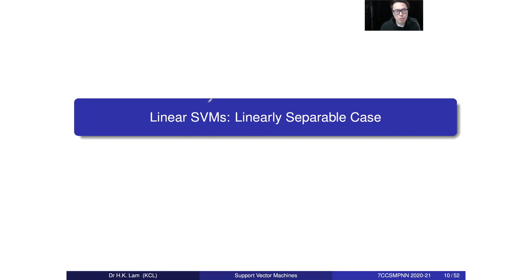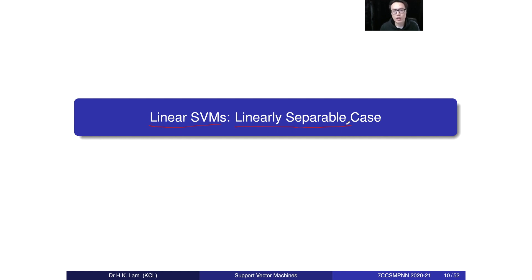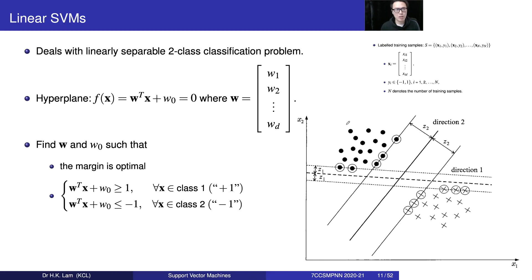Now we talk about a simple scenario — that is linear support vector machines, as well as the dataset. It is the linearly separable case. That means we must have a support vector machine which can give us low misclassification results. Let's look into details about the linear support vector machine with a linearly separable dataset.